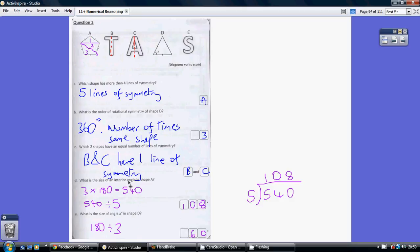Three triangles, 540 degrees. So how do you work out each of the internal angles? 540 divided by 5, done over here as the bus stop, 108 degrees.